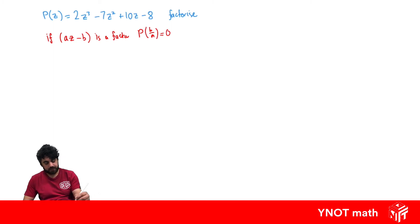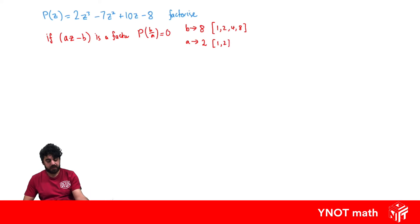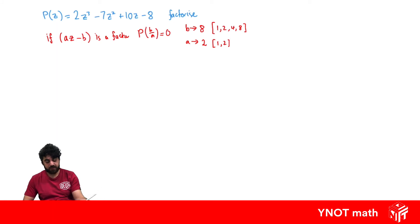The b term depends on the constant term 8, and a depends on the leading coefficient 2. So we need to look for factors of 8 and factors of 2. The factors of 8 are 1, 2, 4, and 8. The factors of 2 are 1 and 2. We need to examine the combinations of b divided by a.